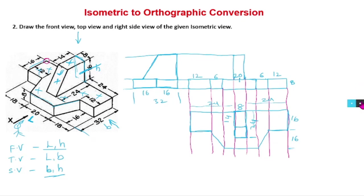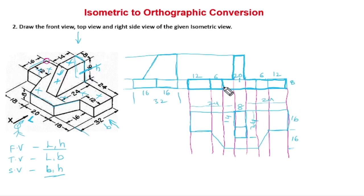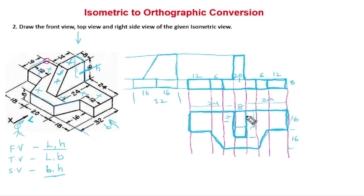This is the front view, top view, and side view. I will draw the object lines a little bit thicker so they stand out from the projection lines. The overall figure looks like this — the dark lines are the front view, from here to here is the top view, and the side view is the one I just completed.